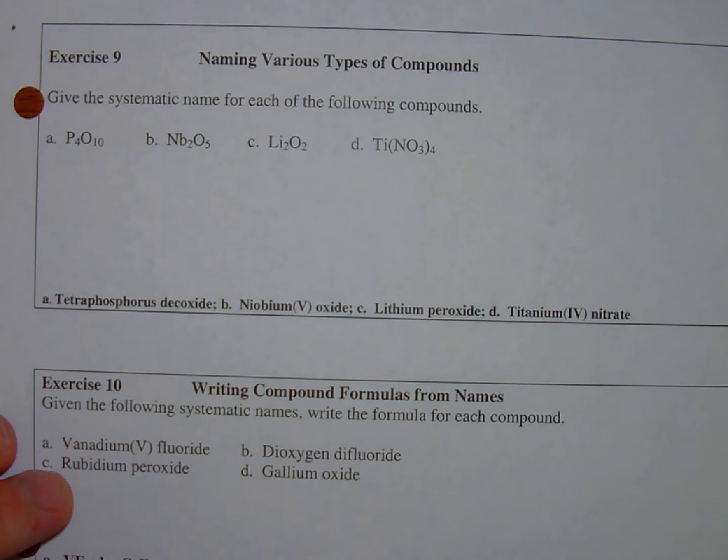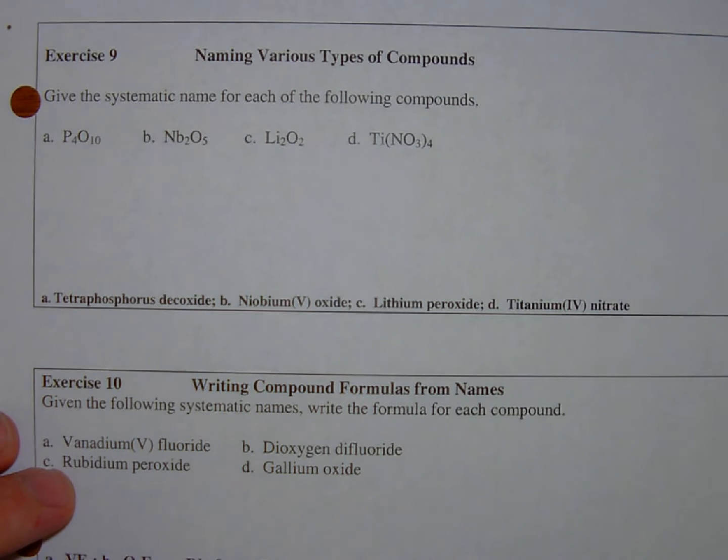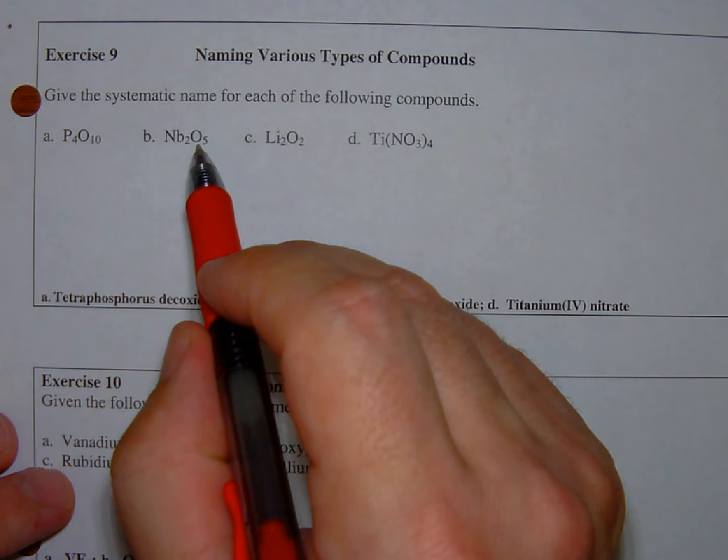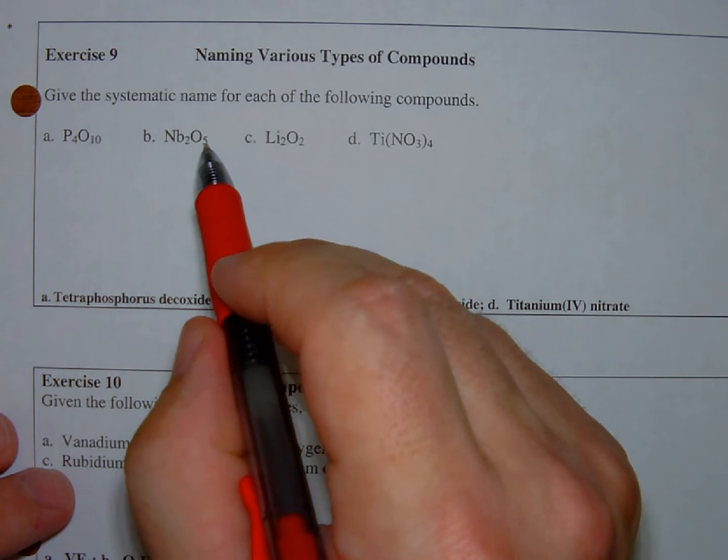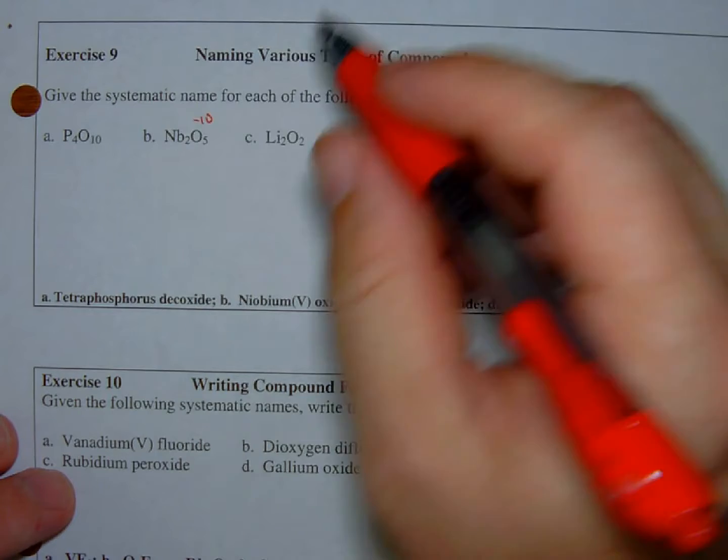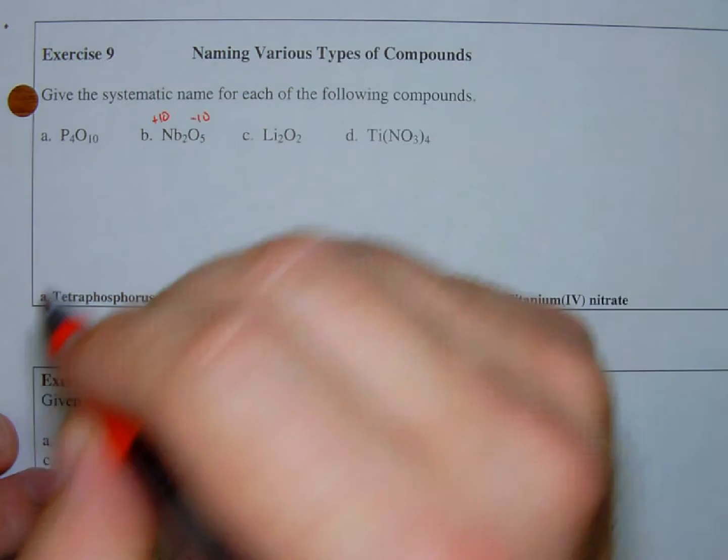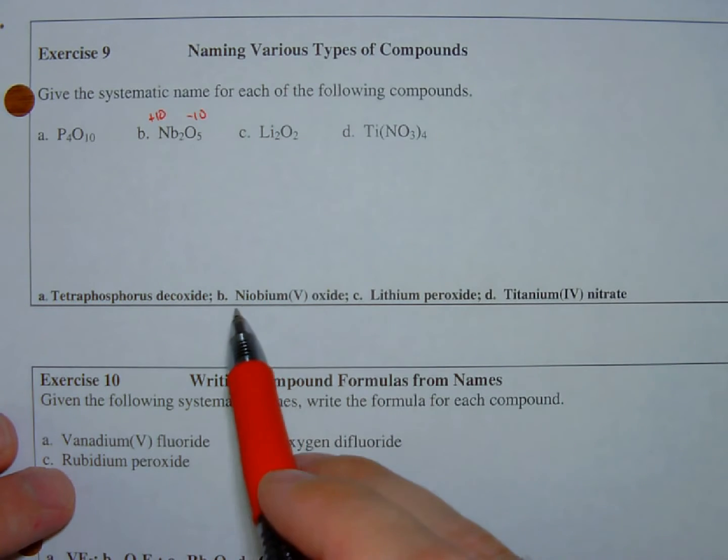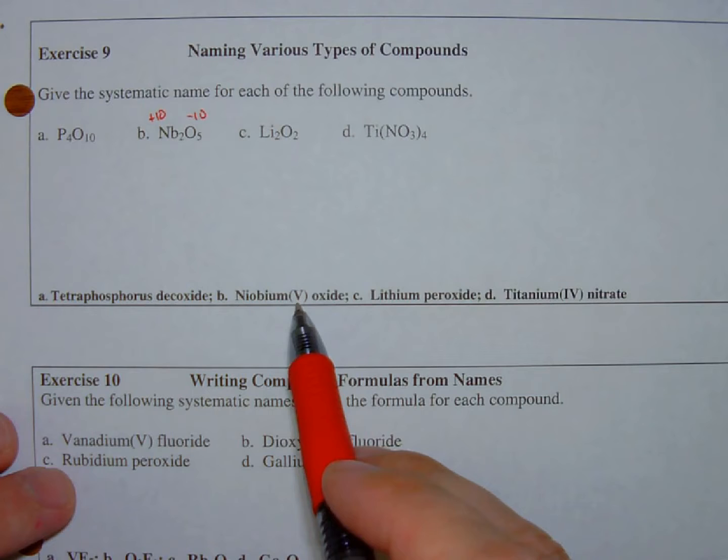This is niobium. Niobium is a transition metal so I'm going to have to use the stock system and include parentheses with a Roman numeral. But what is the Roman numeral going to be? I look at the oxygen - representative elements always have a negative two charge. There are five of them, so that's a total of minus ten. There must be a plus ten to balance that out. Two niobium atoms are providing that plus ten, so that's going to make it niobium five oxide.